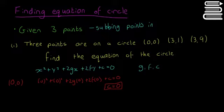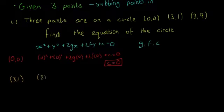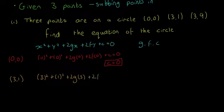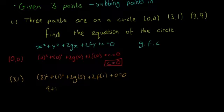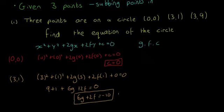Now we sub in (3, 1). You sub 3 in wherever there's an x and 1 in wherever there's a y: 3² + 1² + 2g(3) + 2f(1) + 0 = 0. That gives us 9 + 1 + 6g + 2f = 0, so 6g + 2f = −10. We'll box that and call it Equation 1.